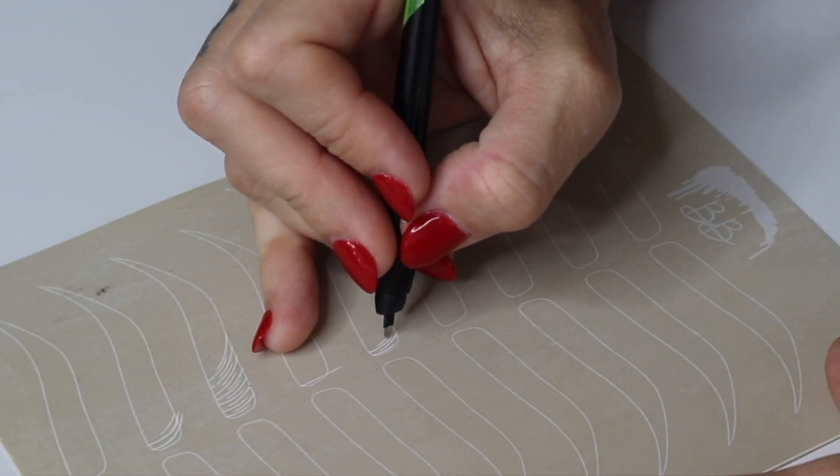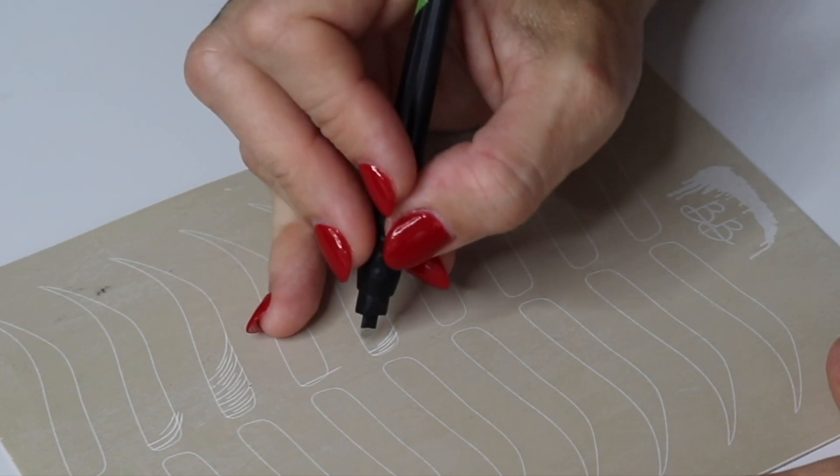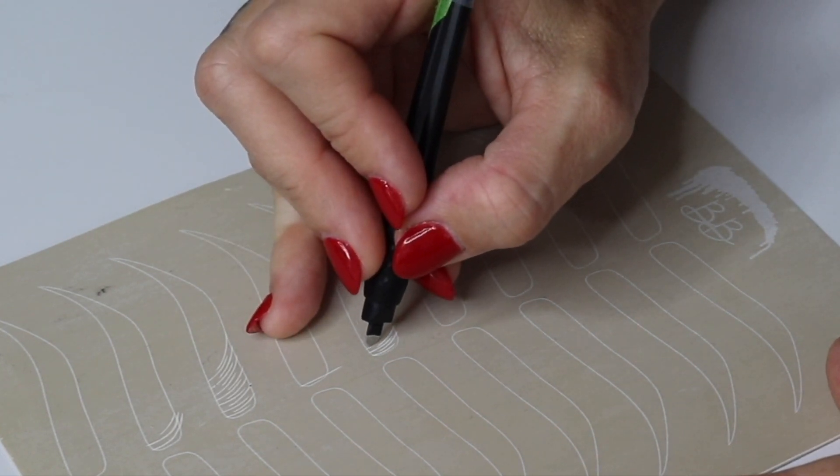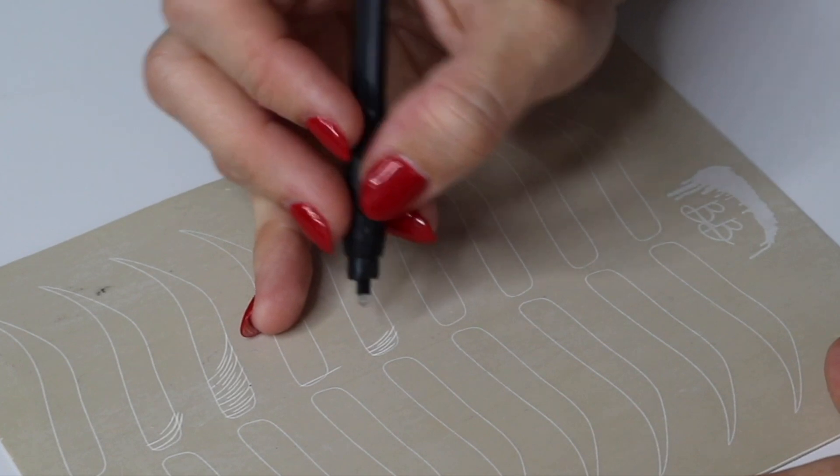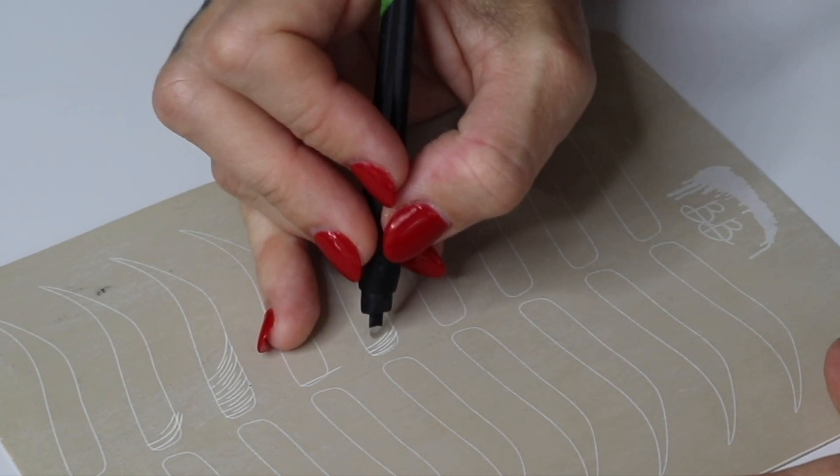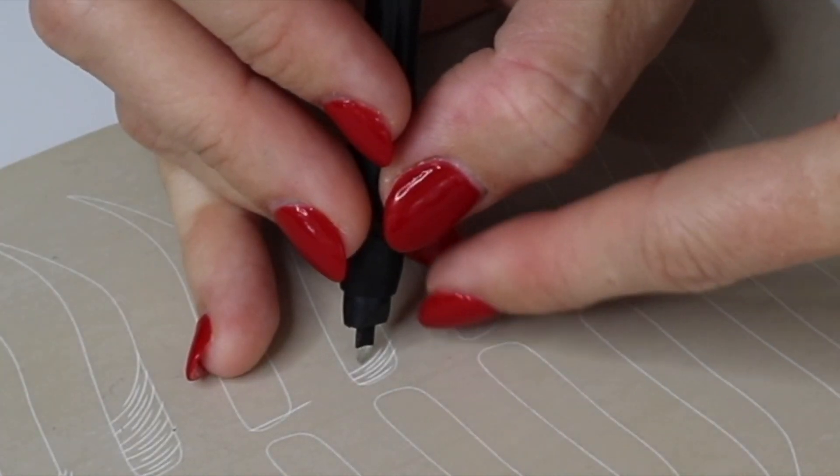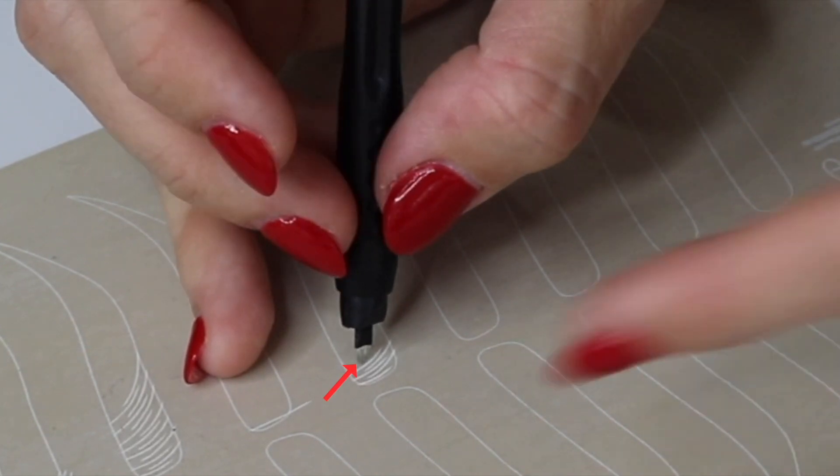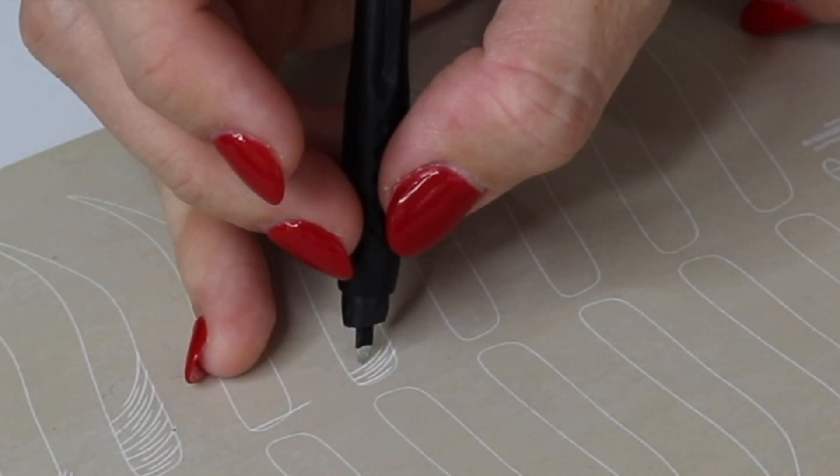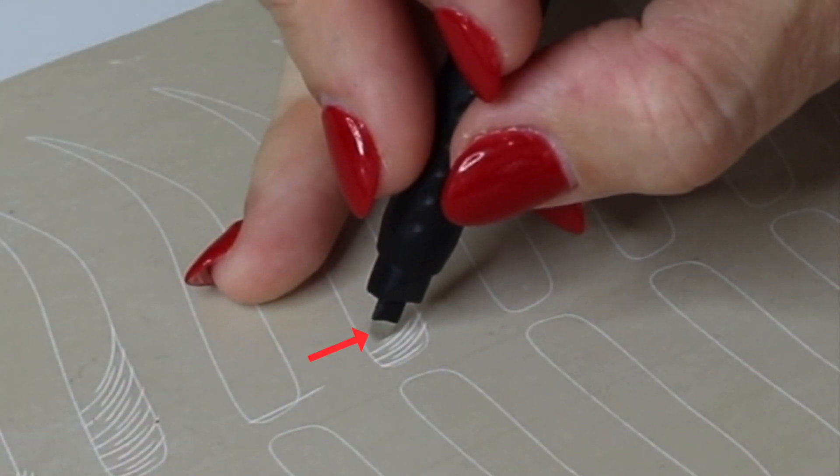Again the direction that your blade starts at is crucial to where your blade is going to end especially if we're only making a one o'clock curve. Again see right here my blade is going this way. I am not starting it this way.